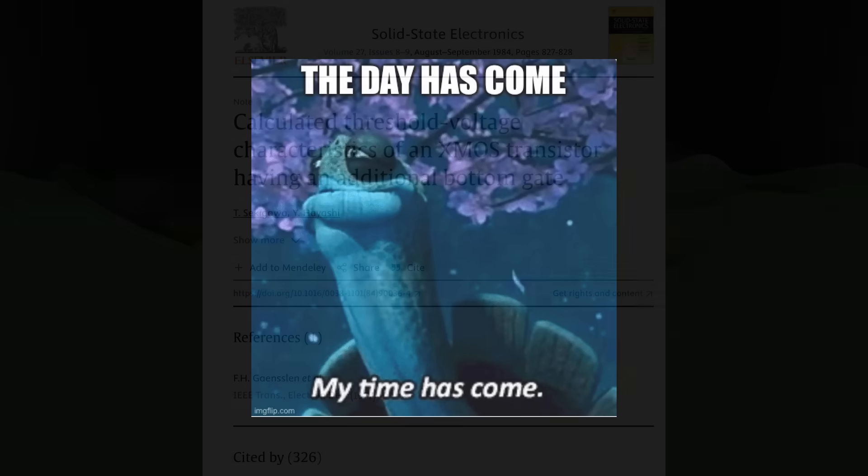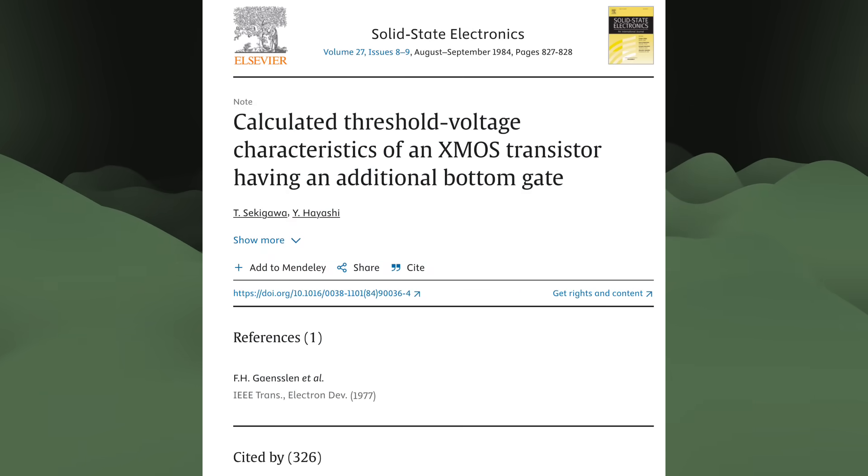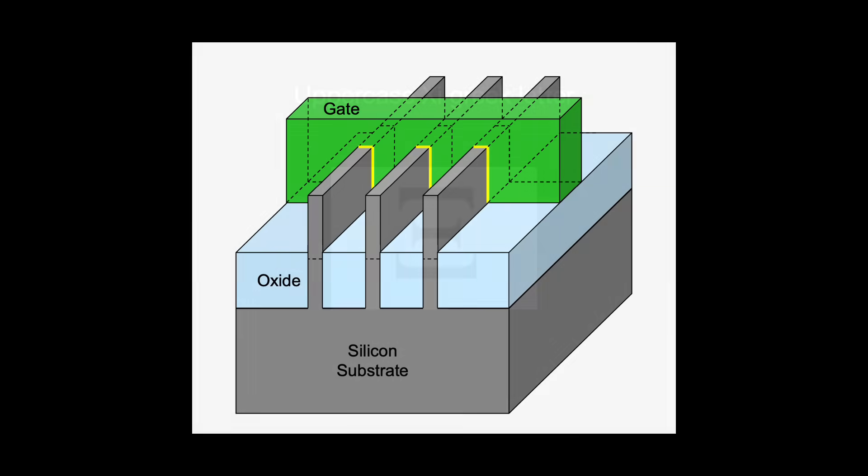In 1984, two Japanese researchers, Sekigawa and Hayashi, published a paper proposing what they called multi-gate transistors. The authors proposed a transistor with two connected gates. They called it a double-gate MOS transistor or X-MOS since it looked like the Greek letter Chi from the side. This brings us to the FinFET, which intensifies the gate's control over the channel by wrapping it around the channel, the eponymous fin, on three sides.